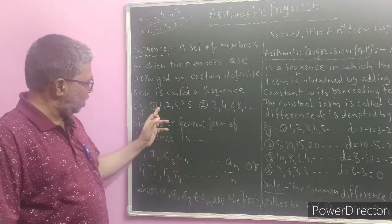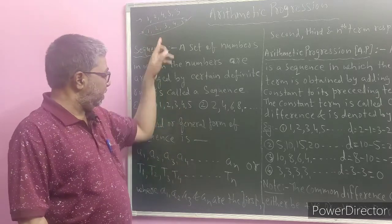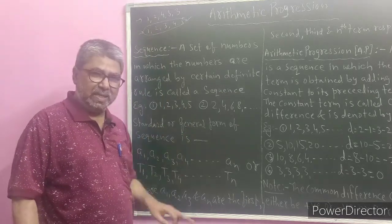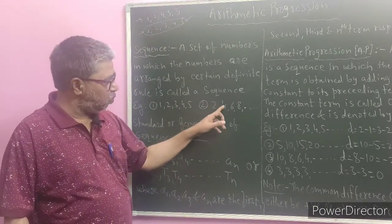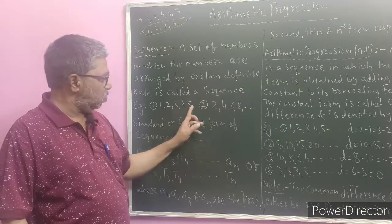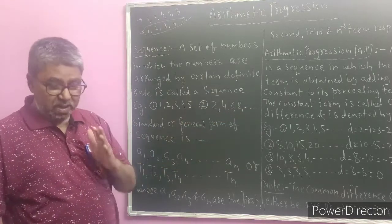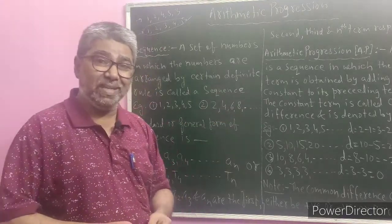For example: 1, 2, 3, 4, 5. Another example is 2, 4, 6, 8, and so on. These are the two examples of sequences.